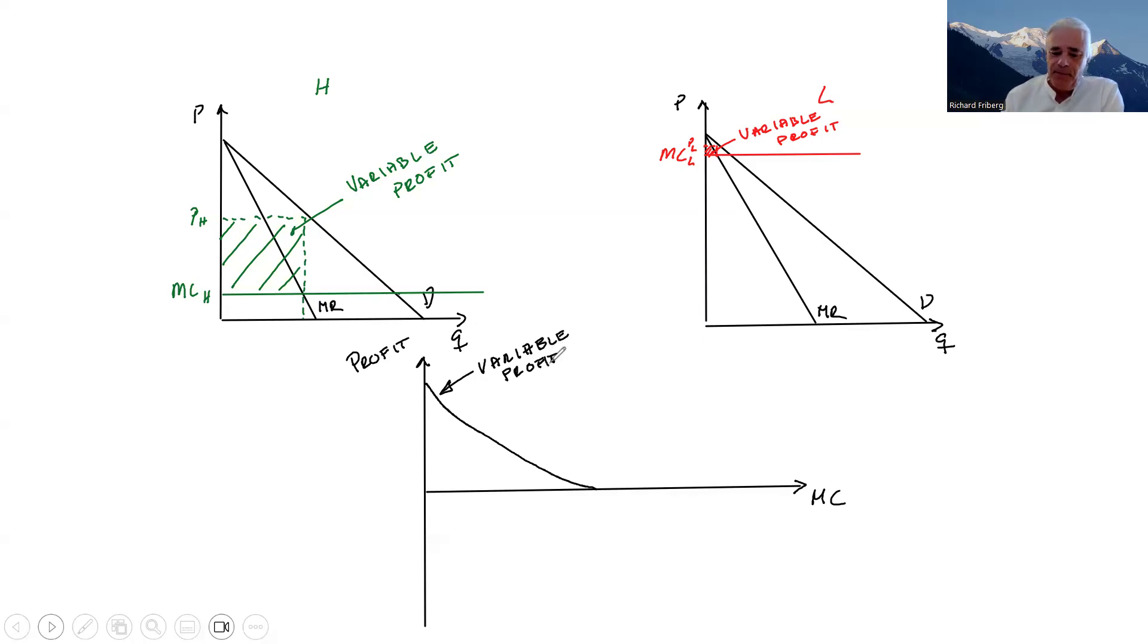And we're getting lower variable profits. The higher marginal cost you have, the lower are profits, up to some point MC over bar here. We could think of this as the point where the marginal cost is as high as the intercept of the demand curve here.